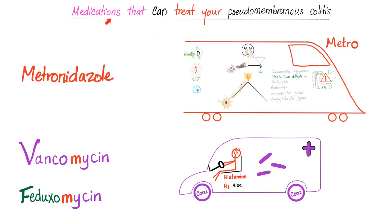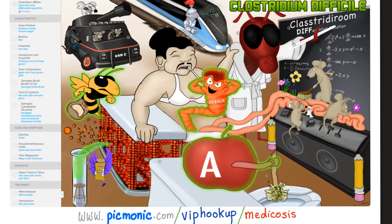What medications can treat pseudomembranous colitis? All of them are modes of transportation: the metro, the van, and the FedEx truck. The metro is metronidazole. The van is vancomycin. The FedEx truck is fidaxomicin.